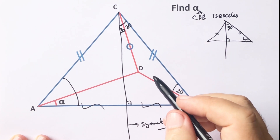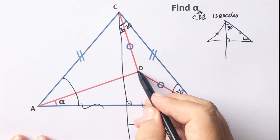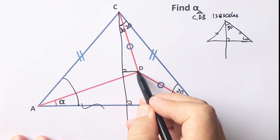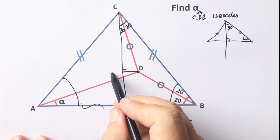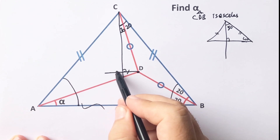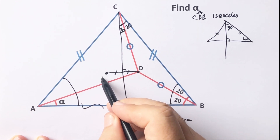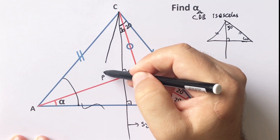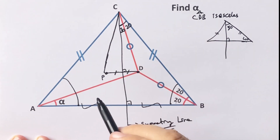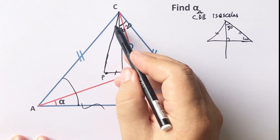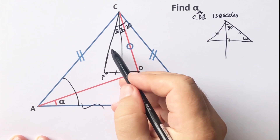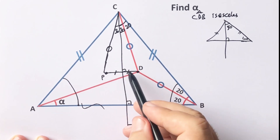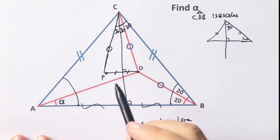If we take the symmetry of this point, these two parts must be equal. Let's call this point P — P is the symmetry of point D. Therefore here must be 30 degrees, and these two sides are equal. These two parts must be equal because of symmetry.